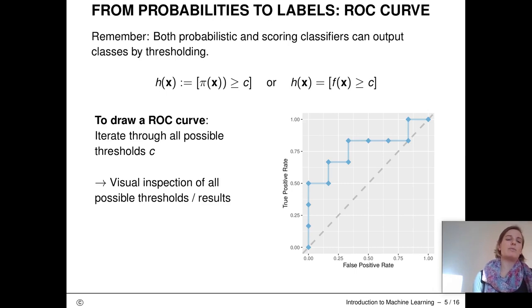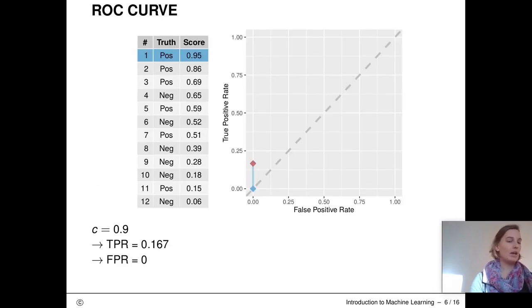Let's go through the steps of computing the values needed for the plot by going through an example. Here, we have an example dataset with 12 observations. We have one column, we have the true outcome, positive or negative, and in one column the predicted score. In this example, possible scores range between 0 and 1. The observations are sorted by predicted score from high to low.